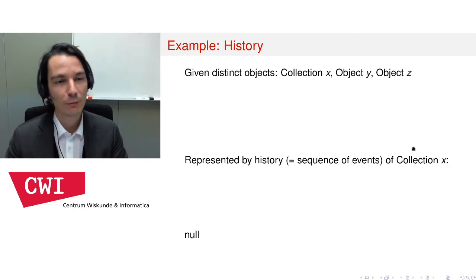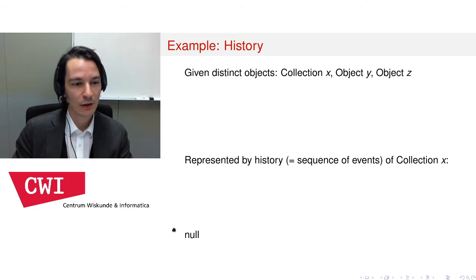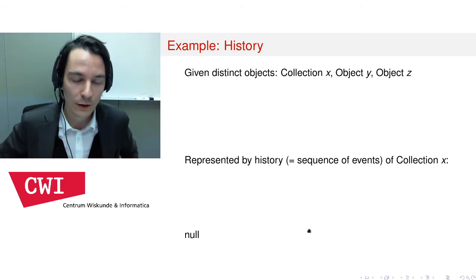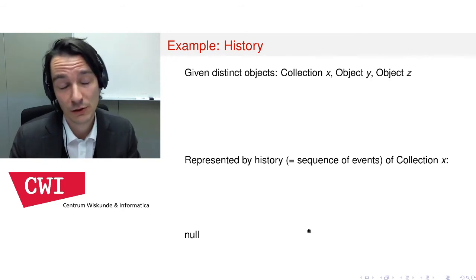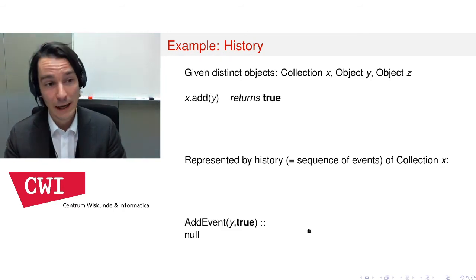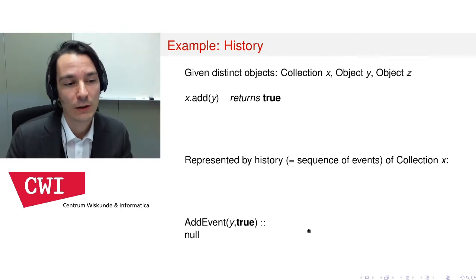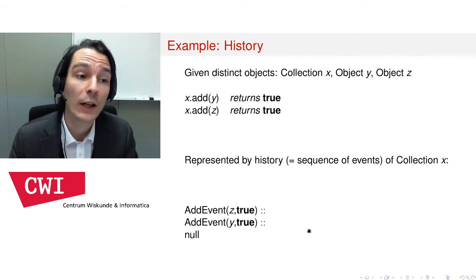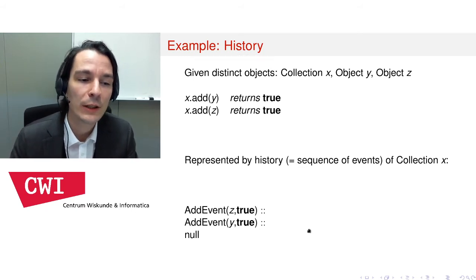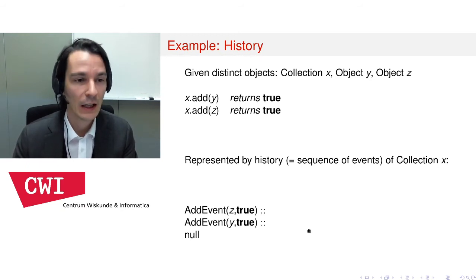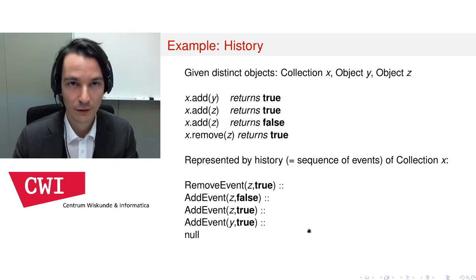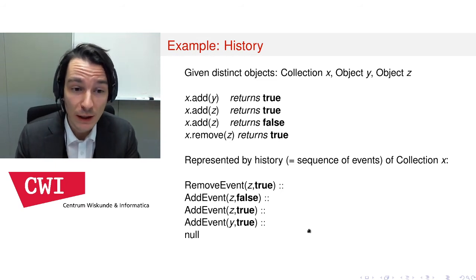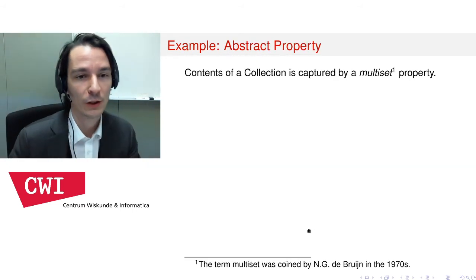To make matters more concrete, here is an example. An empty history is represented by null. For every method call performed on a particular interface — in this case collection x — we record it by adding an event; a history is a sequence of events. Suppose we call add on x with object y and it returns true: we record the add event with the same parameter and return value. If we then call add again with a different argument z, which also returns true, we again record this by adding an event to the sequence. This continues for other events such as the remove method call. Now that we know a history is a sequence of events, we can understand what an abstract property of the history is.